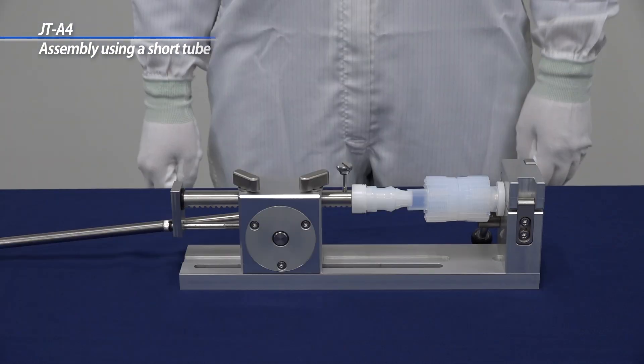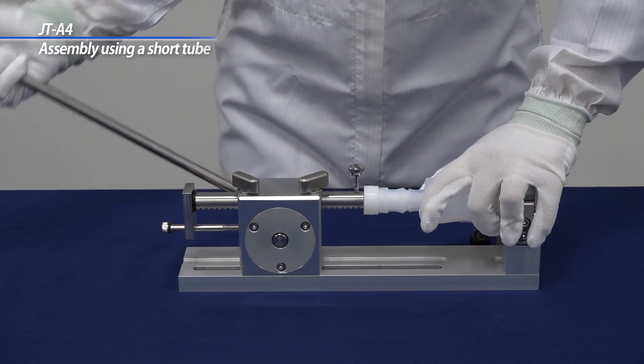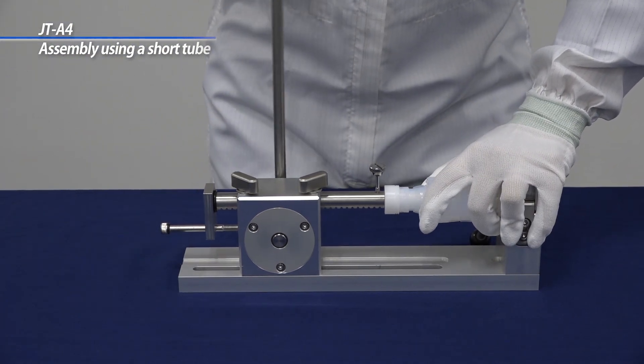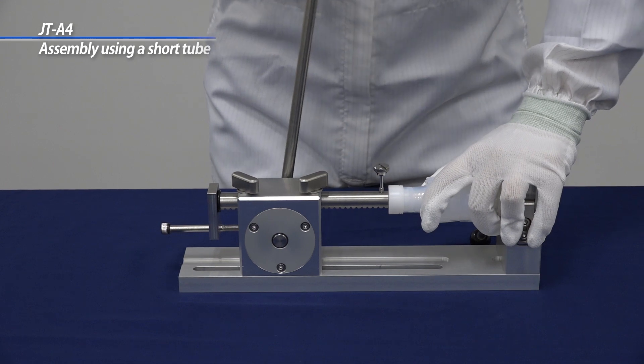Then, you simply need to grab the handle on this arbor press and stroke the tool and insert the sleeve into the piece of tubing. The sleeve is fully inserted when the tube reaches the shoulder of the sleeve.